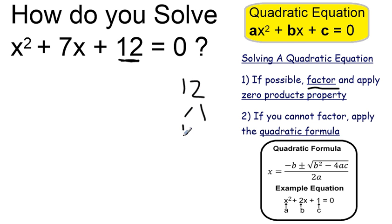12 is divisible by 1 and 12, by 2 and 6. 1 and 12 add up to 13. 2 and 6 add up to 8. But it's also divisible by 3 and 4, which do add up to 7, which is what I'm looking for.